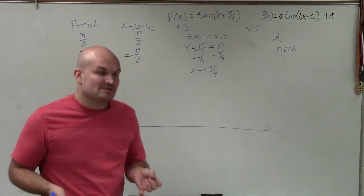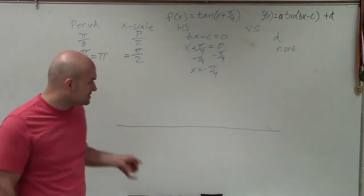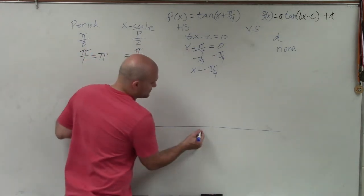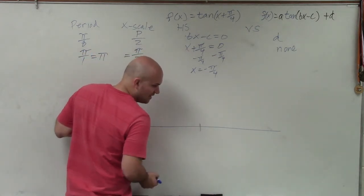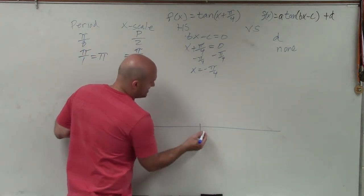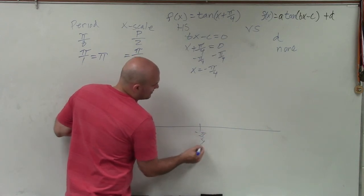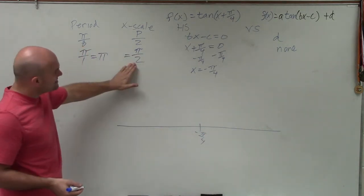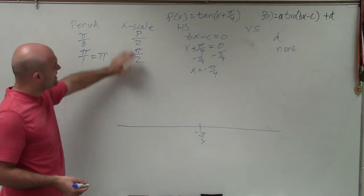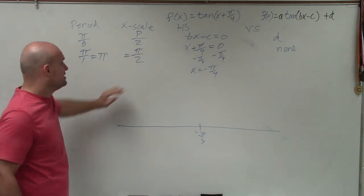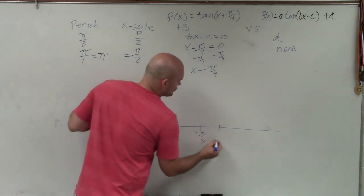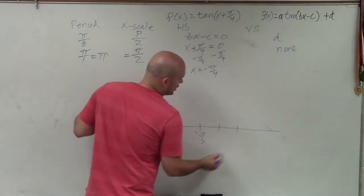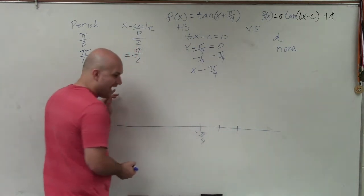When we're graphing, I always like to start at my horizontal shift. So the first point I'm going to start at is negative π over 4. Notice that my x scale is π halves, so to each coordinate to the right or to the left, I need to go over π halves.